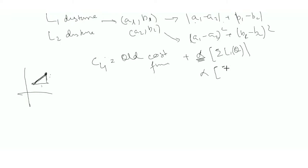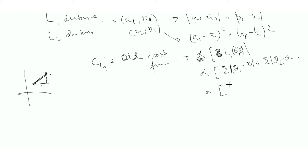The L1 distance of the parameters is the summation of L1 distances of each theta from the origin, which is basically |θ₁ − 0| + |θ₂ − 0| and so on. That comes out to alpha times (|θ₁| + |θ₂| + ...).